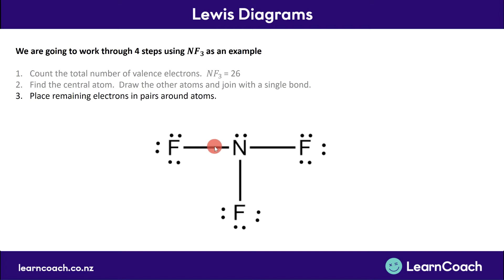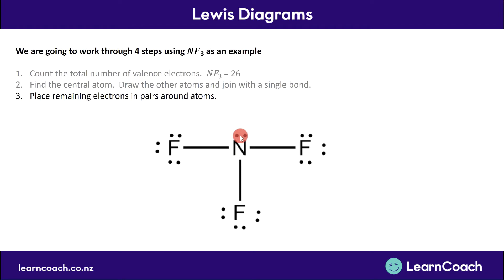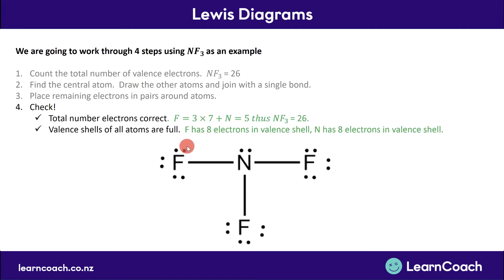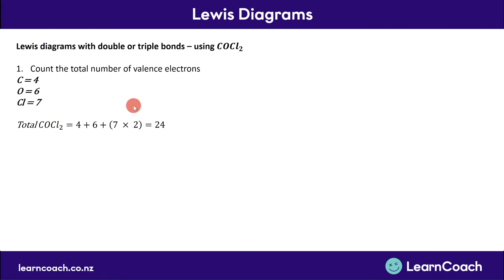Checking each atom: the fluorines each have two, four, six, eight electrons — good. The nitrogen also has eight — good. Then you check step four: confirm you've got the right total number of dots, and verify that the valence shells of all atoms are full. For NF3 we're good on both counts.